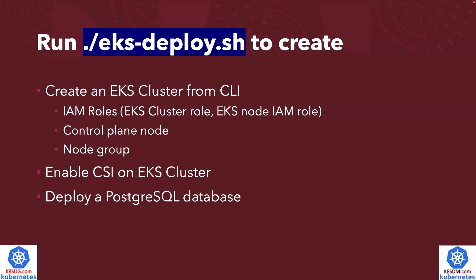First, how to create an EKS cluster from the command line — you don't have to deal with how to create the IAM role for the EKS cluster, how to create the EKS node IAM role, how to create control plane nodes, or how to create a node group. And after that, if you are running a stateful application, you still need to enable the CSI driver on the EKS cluster and then deploy a sample database. All of these I make super simple — just run one command and it will be fully automated. In about 18 minutes, it will be ready.